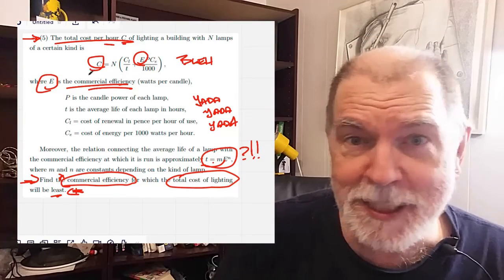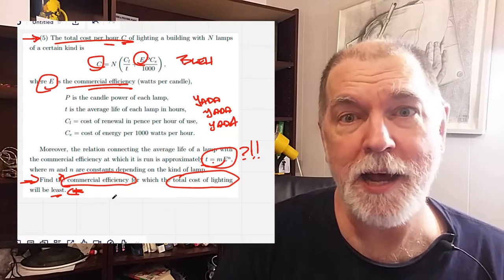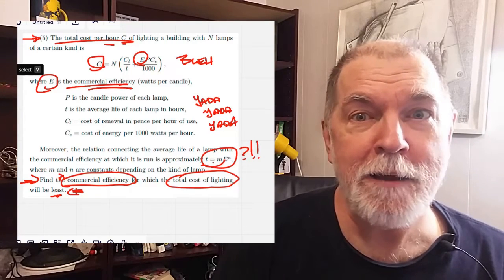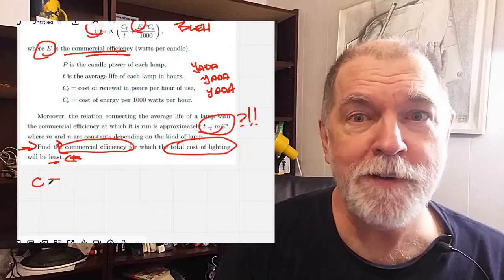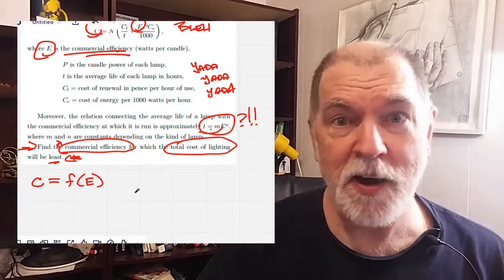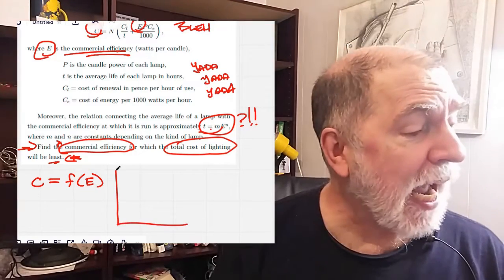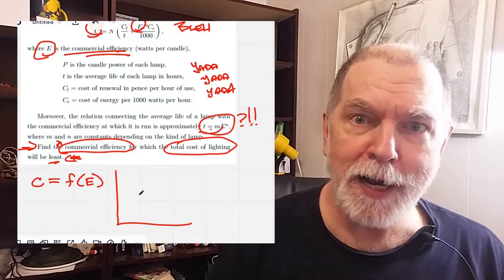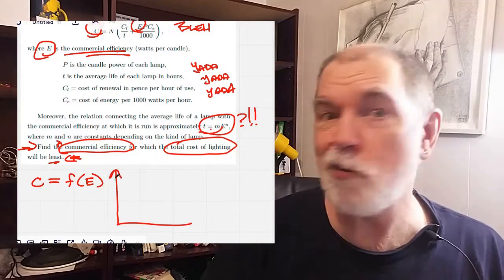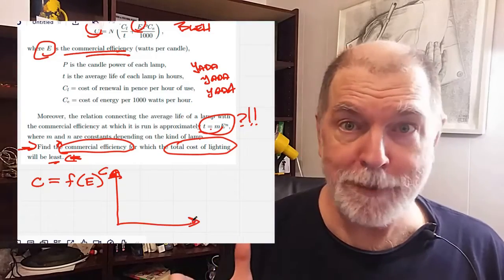So within this mess of an equation, what we have is a function of some variable E. And so we could plot that on a C versus E axis. And we're looking for a minimum. So our function is going to look somewhat like this with a little dip.